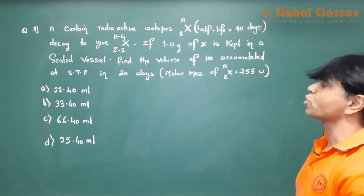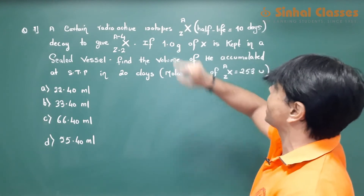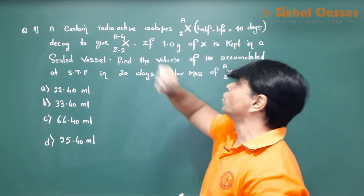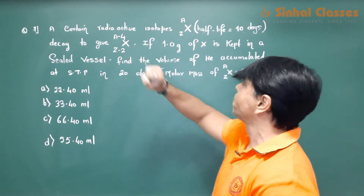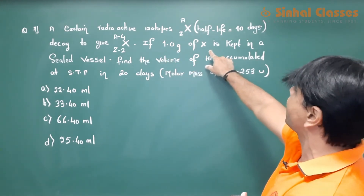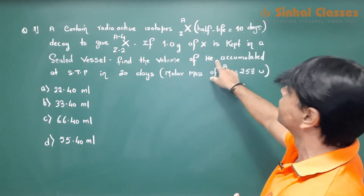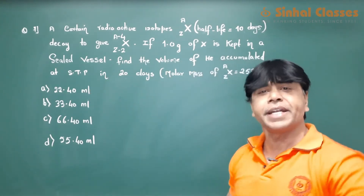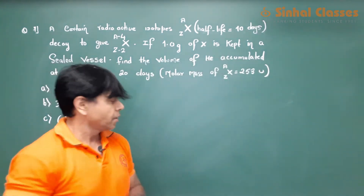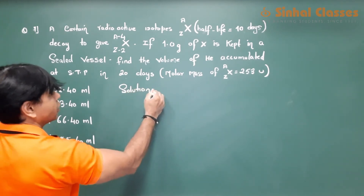Have a look at this question. A certain radioactive isotope X has a half-life of 10 days and decays by releasing one alpha particle. If 1 gram of X is kept in a sealed vessel, find the volume of helium accumulated at STP in 20 days. The molar mass is given. For 20 days, number of half-lives is 20 divided by 10, so two half-lives have passed.